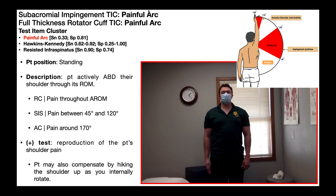We're now going to talk about the painful arc test. This test is a component of two test item clusters — one for subacromial impingement syndrome, and the other for a full thickness rotator cuff tear. Before we go any further, let's look at how the test is done.